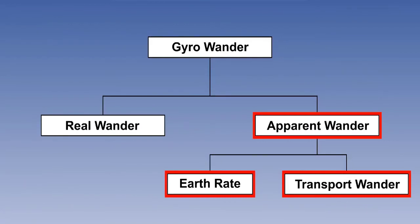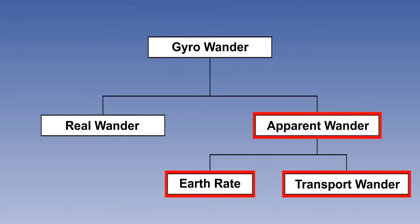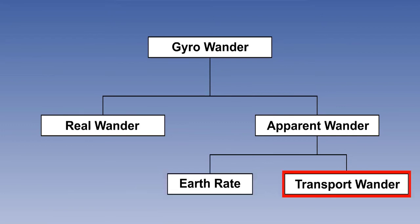This leaves us with apparent wander. You will remember that this is split into earth rate and transport wander, and both of them are needed to stabilize the platform. We need to examine earth rate in more detail to understand how INS alignment takes place, why it takes so long, and why the aircraft cannot be moved whilst it is happening. We also need to examine transport wander in more detail to understand how some types of INS errors are caused and why they have a sinusoidal waveform. These are the well-known Schuller errors.